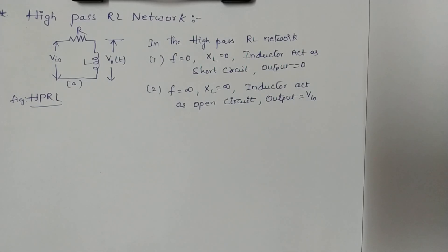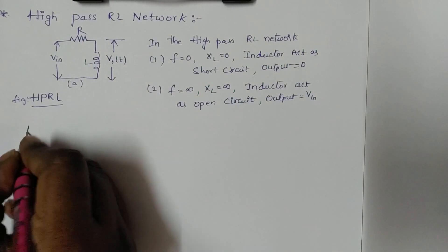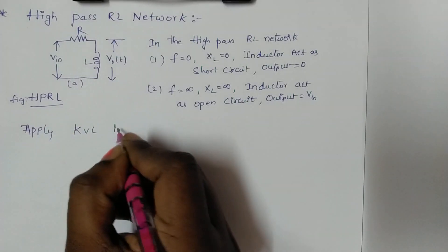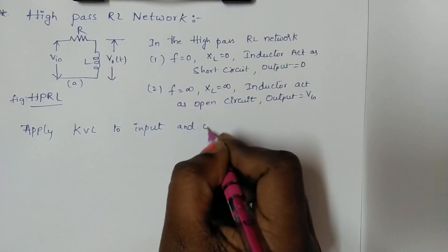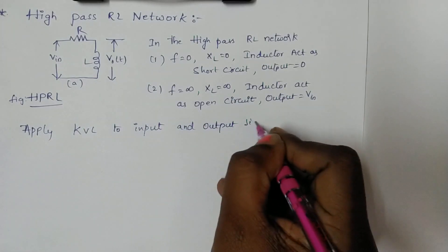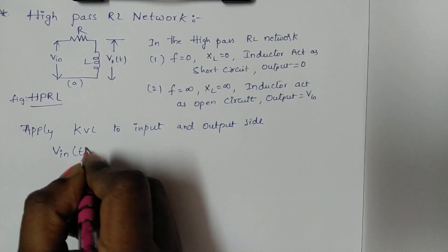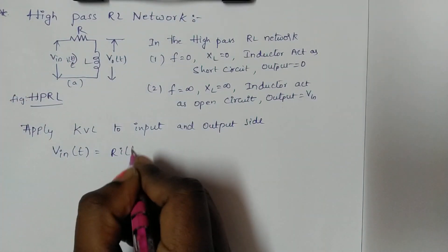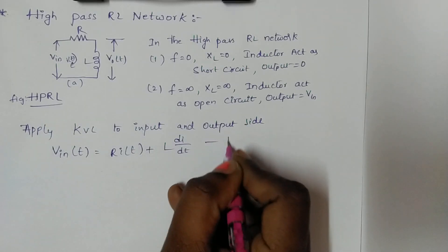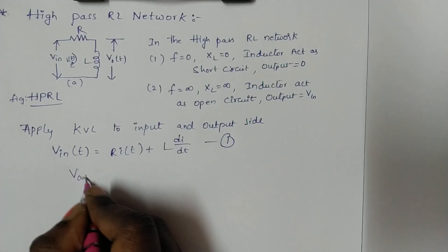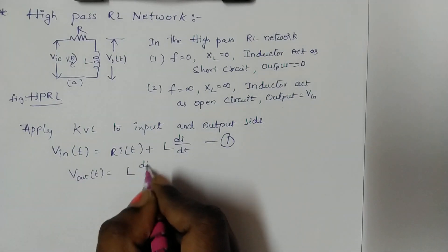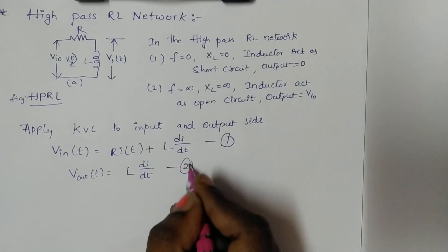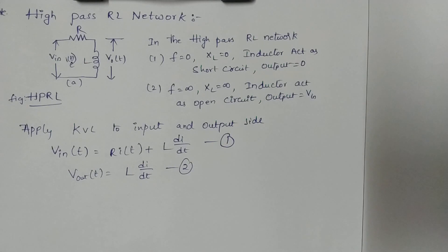In order to find the transfer function, we apply KVL to the input and output sides and write the equations. Applying KVL, V_in(t) = R·i(t) + L·di/dt — make this equation 1. Similarly, V_out(t) = L·di/dt, because from the circuit we know that the output is collected across the inductor — make this equation 2.